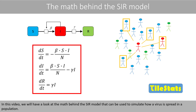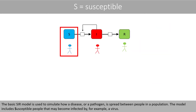In this video, we will have a look at the math behind the SIR model that can be used to simulate how a virus is spread in the population. The basic SIR model is used to simulate how a disease or a pathogen is spread between people in the population. The model includes susceptible people that may become infected by, for example, a virus.